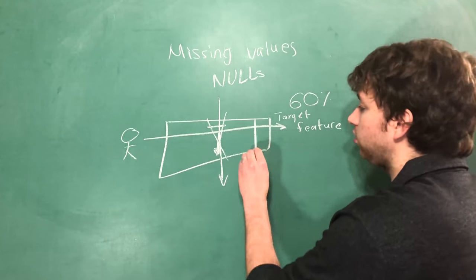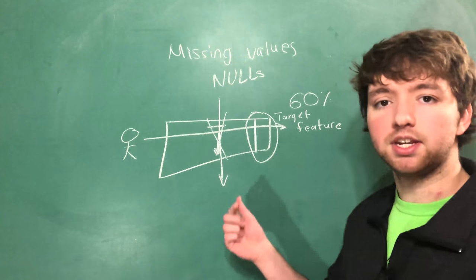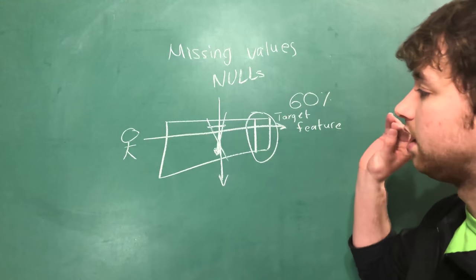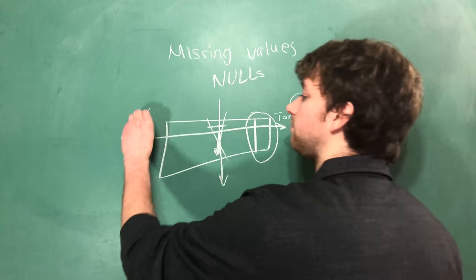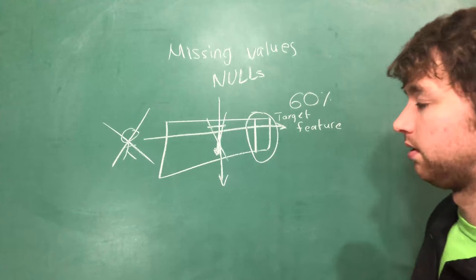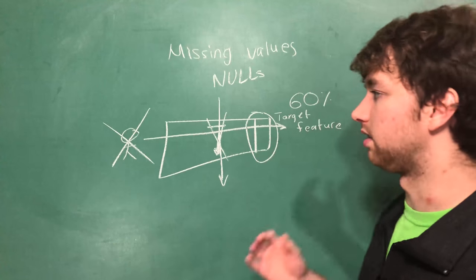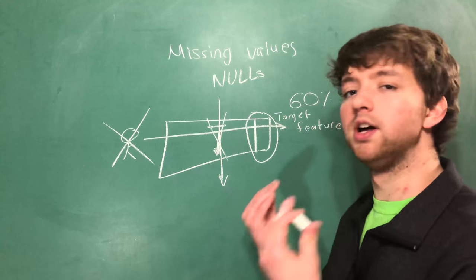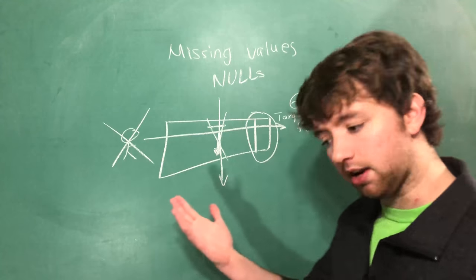If we look at that target feature right here and it's missing its value, well then the process is to just remove that person altogether. And the reason we do that is because that person does not contribute extra information. Think about it.